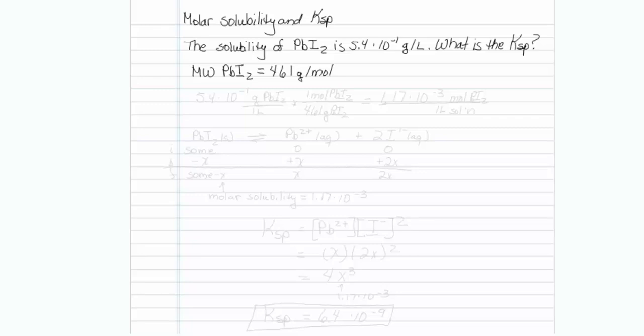First off I think we should be working in molar, which is moles per liter, so a good thing to do might be to have my 5.4 times 10 to the minus 1 grams of lead iodide per 1 liter of solution and just divide it by the molar mass of 461 grams of lead iodide per 1 mole of lead iodide. So let me do that first.